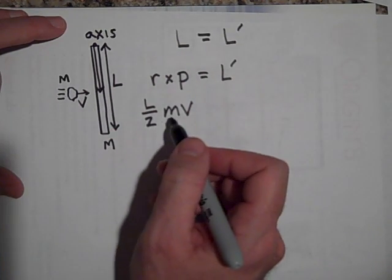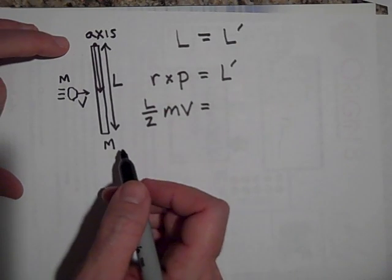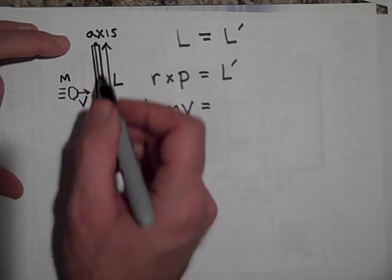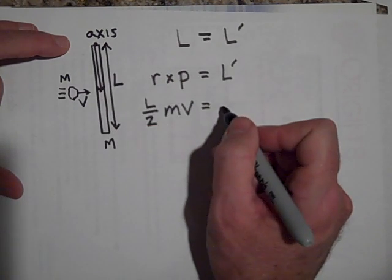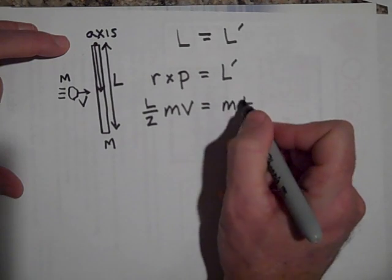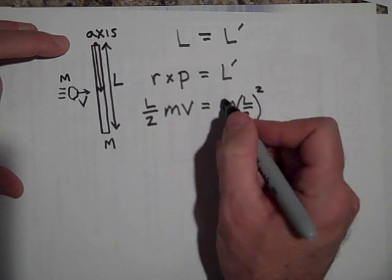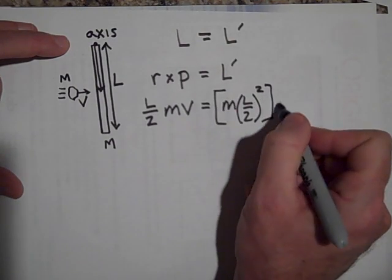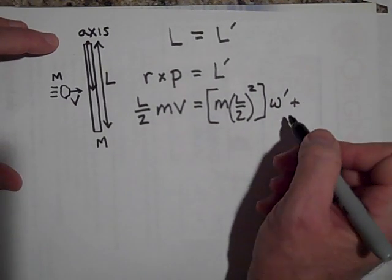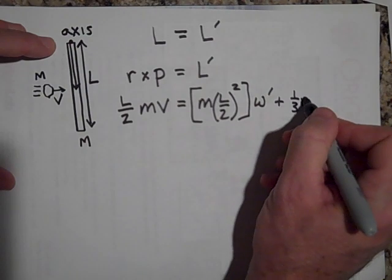Okay, so that's L over two m v is equal to - now once they collide, let's treat this just as though it were part of the door or the meter stick. So it would be the mass of the clay times how far it is away squared. So that's the I of the clay. This is the clay times omega prime, plus the meter stick. Now if that's a meter stick, then that's one third mL squared. That's the I of a meter stick times omega prime.